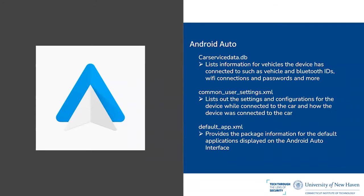Our vehicles and head unit — the Subaru Crosstrek and the Alpine head unit — did not support Wi-Fi, or it was not set up and used. The common_user_settings.xml file lists out settings and configurations for the device while connected to the car, including how the device was connected — via USB or Bluetooth. It's important to note that Bluetooth is supported for both Android Auto and Apple CarPlay, but our head units did not support it. The default app file provides package information for the default applications displayed on the Android Auto interface.